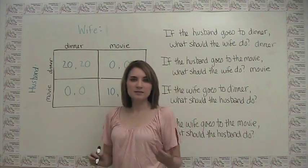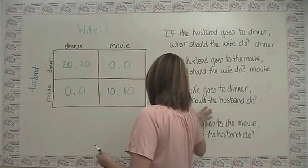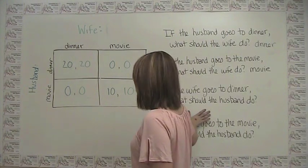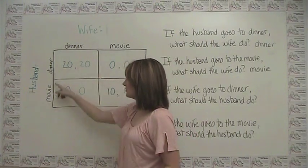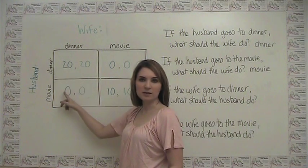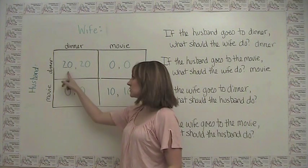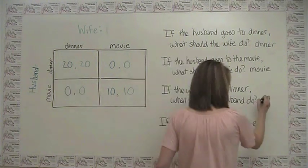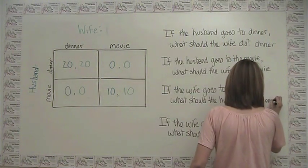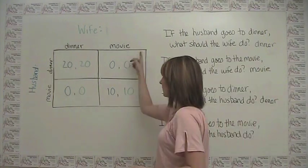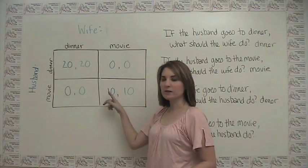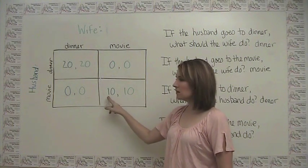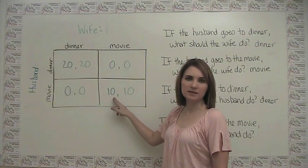Now thinking about this from the other direction: if the wife goes to dinner, where does the husband want to go? The husband's payouts are in blue. 20 is better than 0, so the husband wants to go with the wife to dinner. And if the wife goes to the movie, the husband has a choice to either get 0 or 10 — the husband also wants to go to the movie to get the payout of 10.